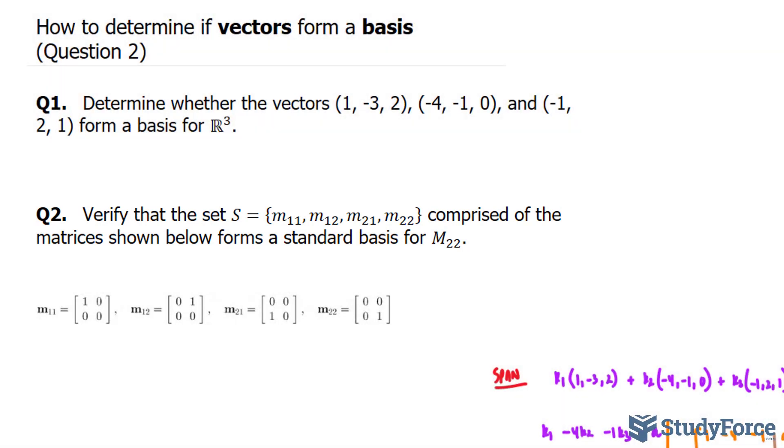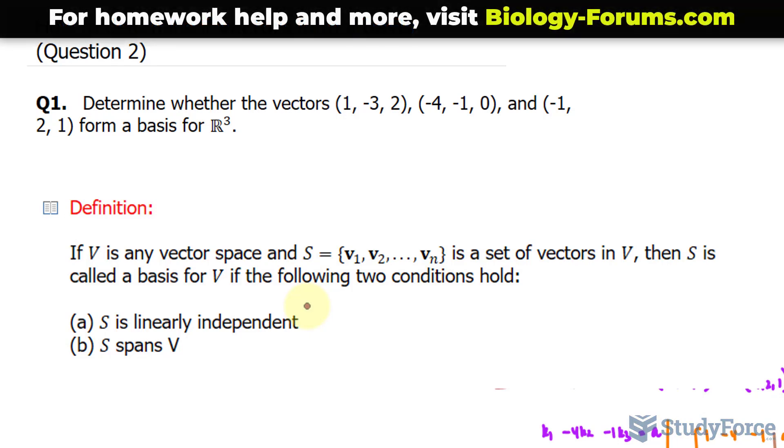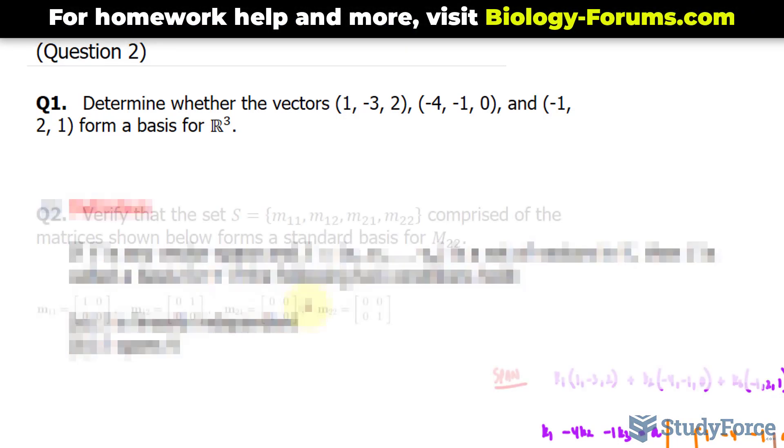Just to recap what we did in question one, we had three vectors as opposed to matrices, and we proved that they span and that they were linearly independent. If you can prove both of those, then what's inside the set forms a basis.